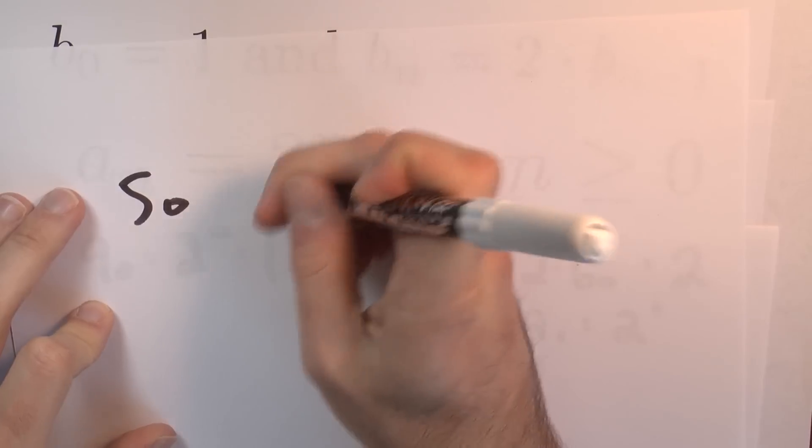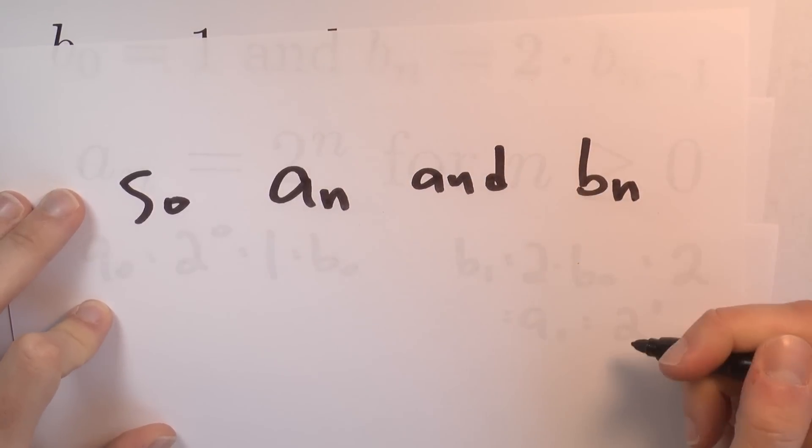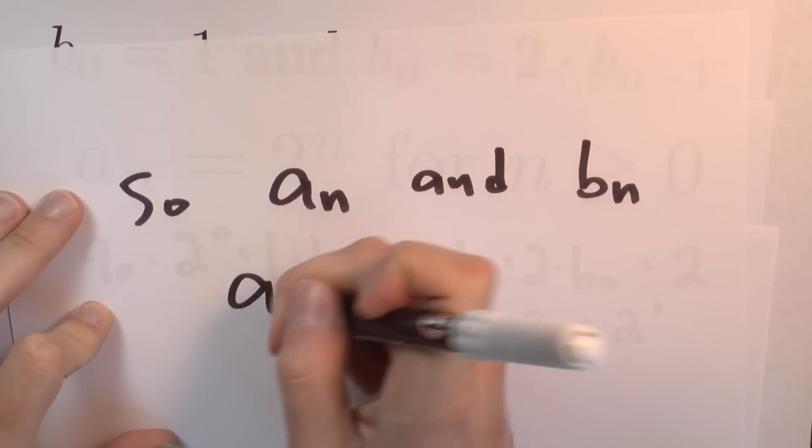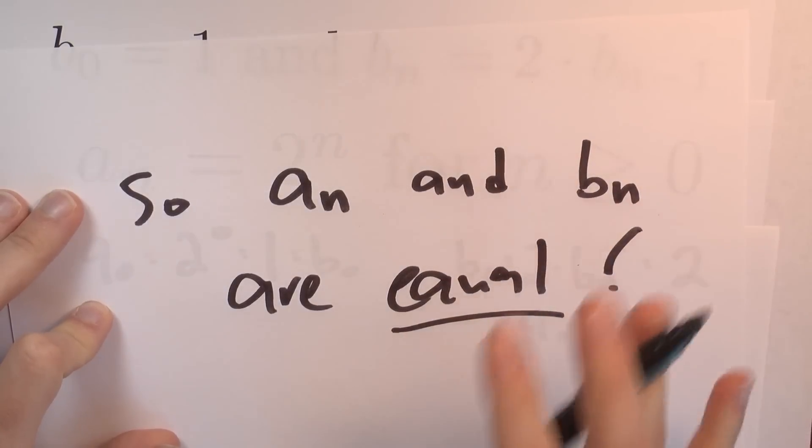A sub anything equals B sub the corresponding thing. So, the sequence A sub n and the sequence B sub n, these two sequences are equal as sequences.